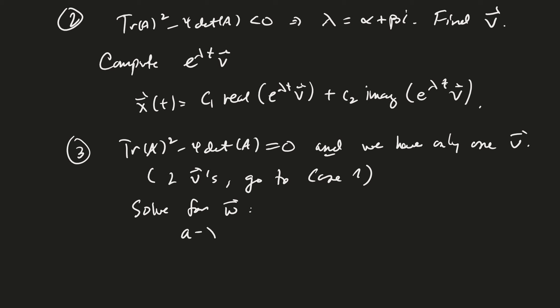Otherwise, we solve for w in this case. And that is by taking a minus lambda times x0 plus b times y0 is equal to w1. And then cx0 plus d minus lambda times y0 equals w2. And notice that x0, where the initial conditions, are x0, y0.